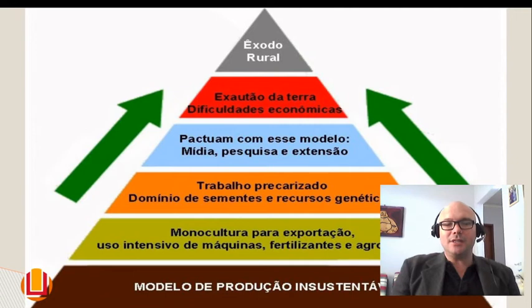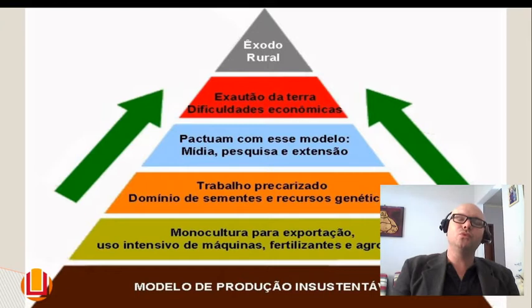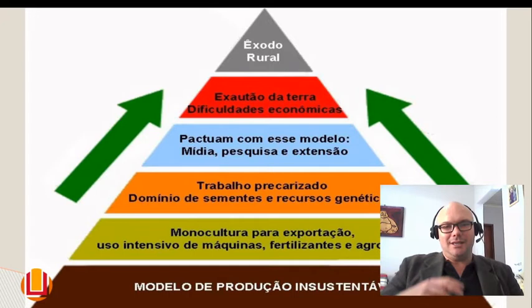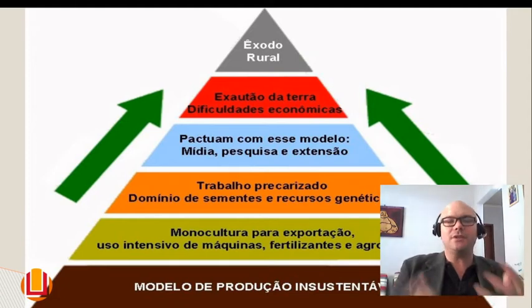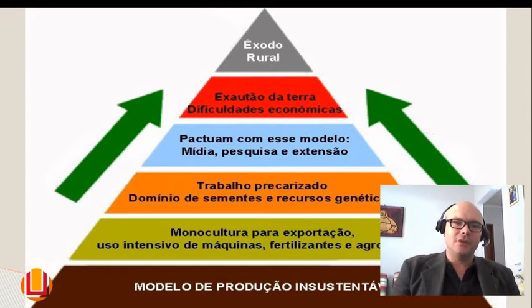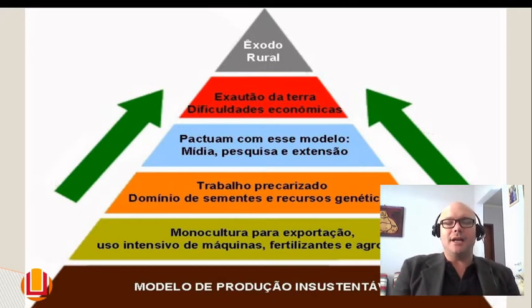Temos um modelo de produção insustentável, primeiro porque privilegia a monocultura de grãos e commodities para o mercado externo, fazendo renascer aquele pacto colonial em que países ditos subdesenvolvidos forneceriam alimento e matéria-prima para os países industrializados. Isso gera exaustão da terra, dificuldades econômicas e concentração da terra na mão de uma oligarquia agrária, ocasionando o êxodo rural das pequenas famílias do campo.